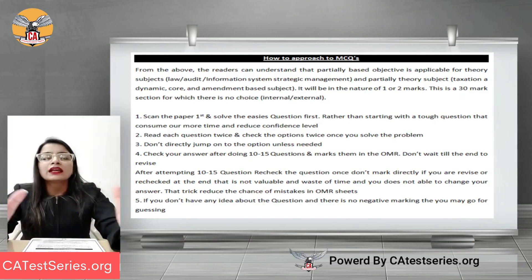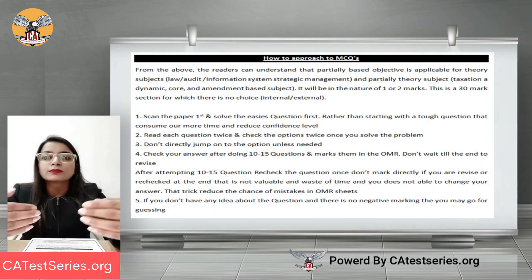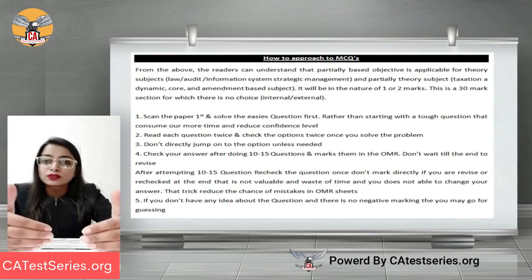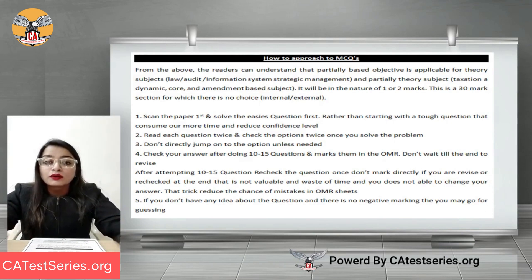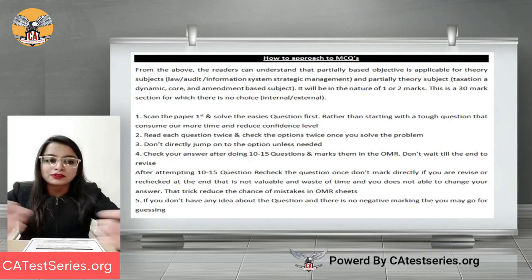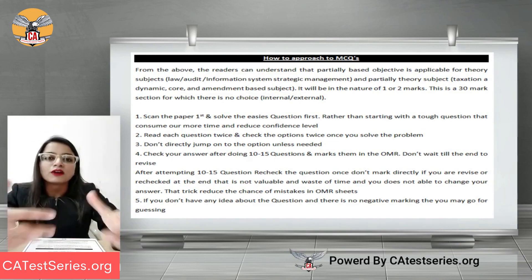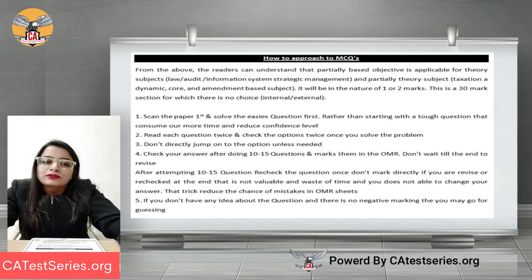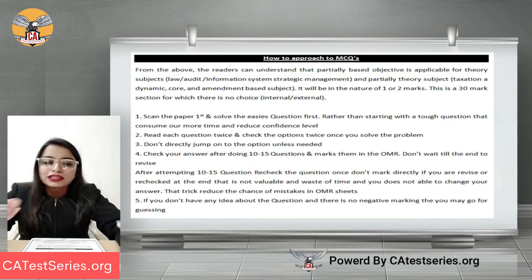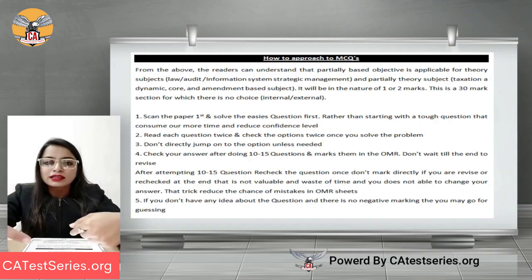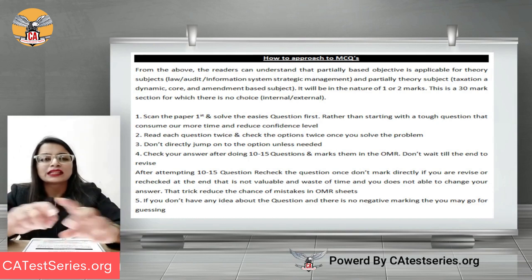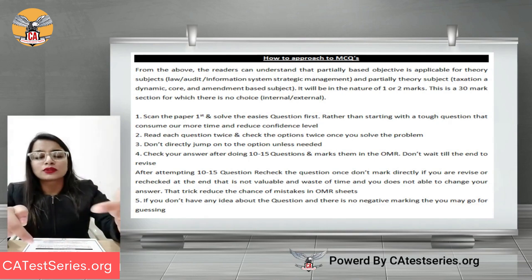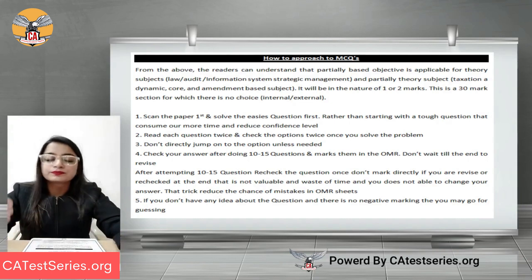Try to grab 10 to 15 marks as quickly as possible. In subjects like Audit, you can get confused when multiple options seem possible, or the question is too long to understand. However, based on your knowledge of the full course, you can often identify what the answer should be — look at the options, mark the one that seems most suitable, eliminate the ones you know are wrong, and then move on. Don't waste time.